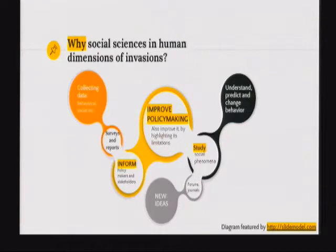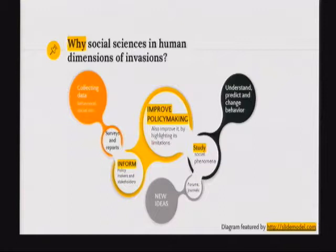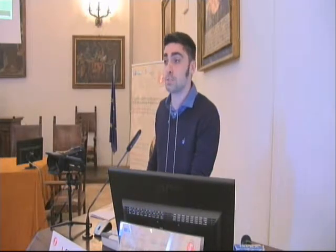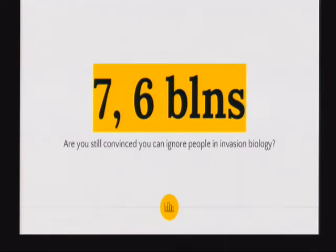Which role could social sciences play in invasion biology? They have two different roles: on one hand, they provide a toolbox of methods to measure human behaviors, collecting data usually in the form of questionnaires or surveys. On the other hand — more challenging — they offer the possibility to understand, eventually predict, and change human behavior. These components are useful for informed policymaking, for studying social phenomena, for generating new ideas, and ultimately to improve policymaking about biological invasions. We cannot ignore society because we are almost eight billion people in the world.